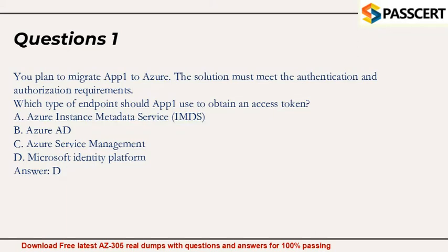Question 1: You plan to migrate App 1 to Azure. The solution must meet the authentication and authorization requirements. Which type of endpoint should App 1 use to obtain an access token? A. Azure Instance Metadata Service (IMDS), B. Azure AD, C. Azure Service Management, D. Microsoft Identity Platform. Answer: D.